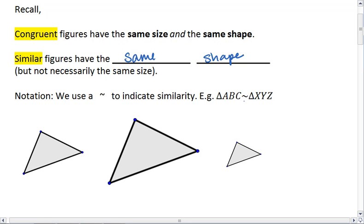For similarity, we use the tilde and the tilde alone. So for example, if we have triangle ABC and XYZ, we say that triangle ABC is similar to triangle XYZ.